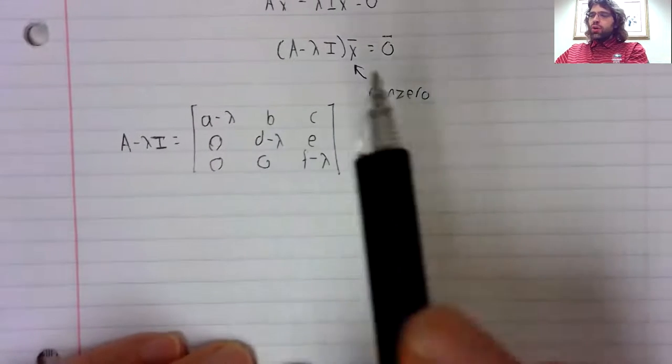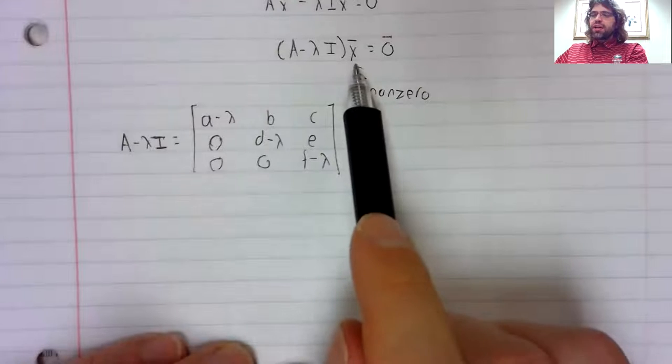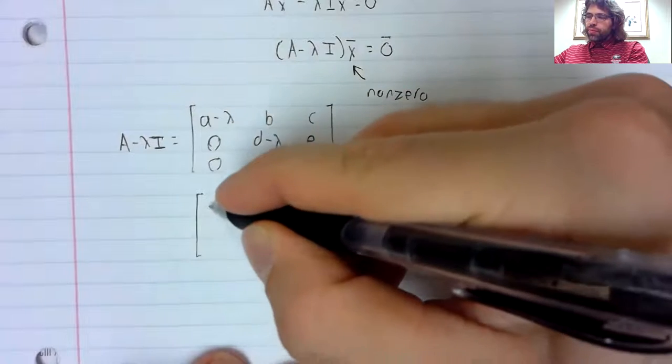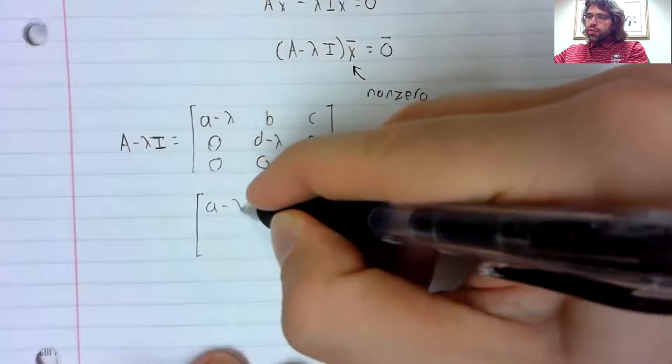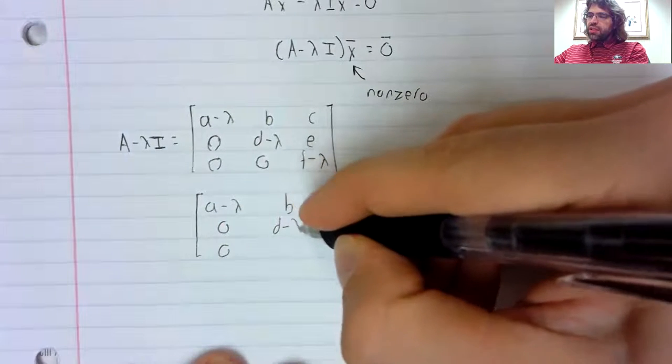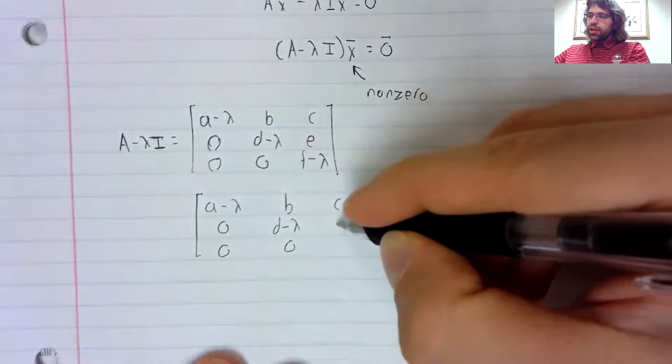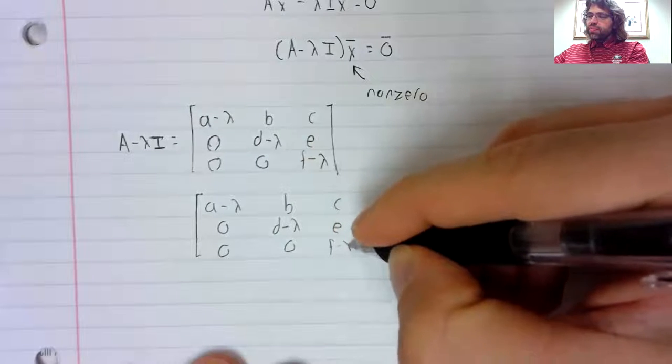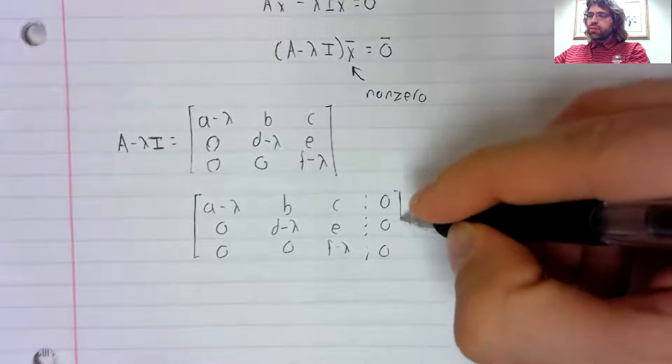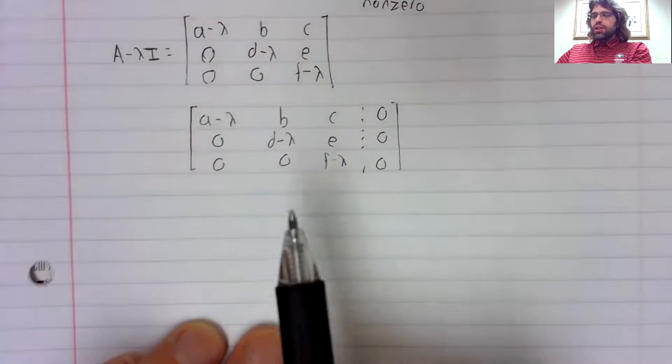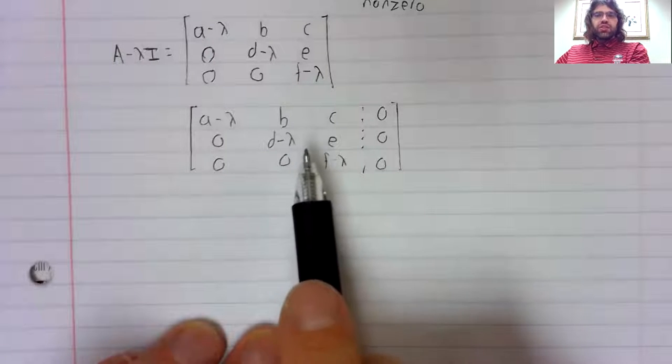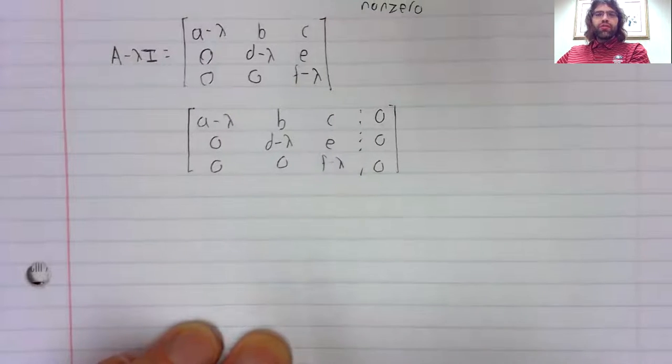And to solve A minus lambda I times x equals zero, we create an augmented matrix. We augment this with the zero vector. Now, this matrix is already in row echelon form.